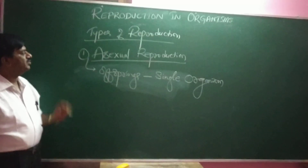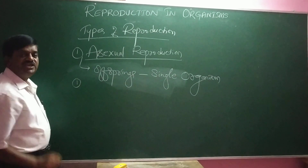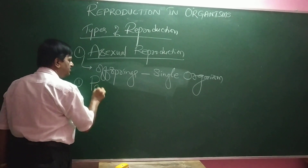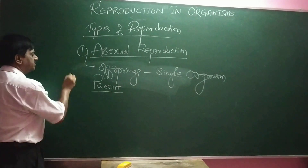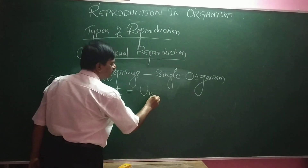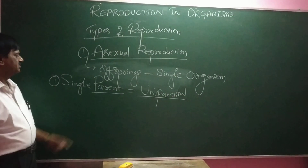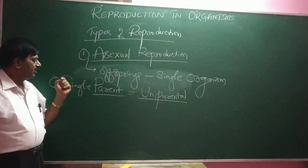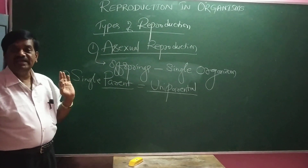Now, some key points related to asexual reproduction. Asexual reproduction always involves only one parent — a single parent. Hence, it is called uniparental. Asexual reproduction takes place by a single parent, which we call uniparental.